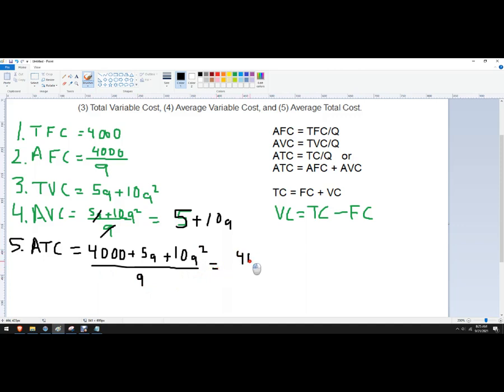Which equals 4,000 over Q plus 5 plus 10Q. And that's our average total cost.